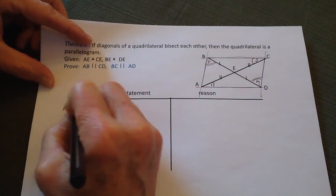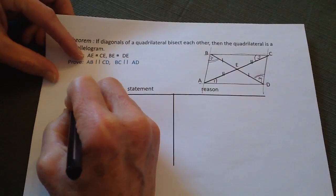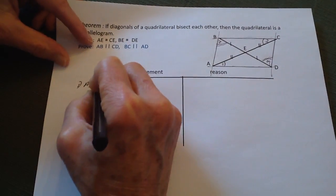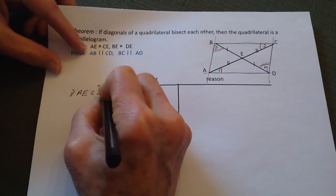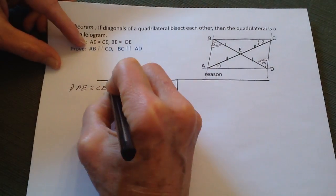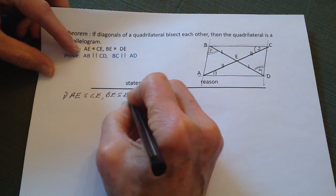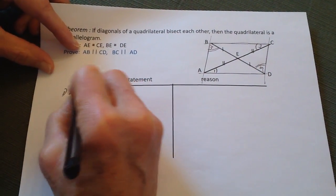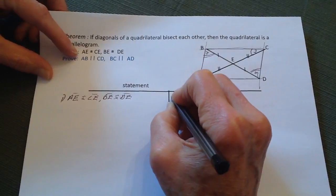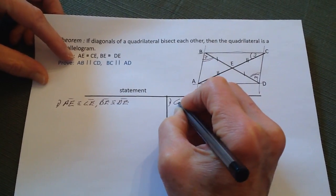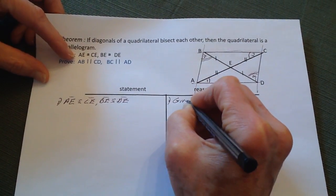Number 1: the statement AE is going to be congruent to CE. Likewise, BE is congruent to DE. These are all segments. This is given.